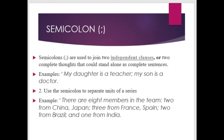Semicolons are used to join two independent clauses — two complete thoughts that could stand alone as complete sentences. For example: 'My daughter is a teacher; my son is a doctor.' We can also use the semicolon to separate units in a series — for example: 'There are eight members in the team: two from China, Japan; three from France, Spain; two from Brazil; and one from India.'